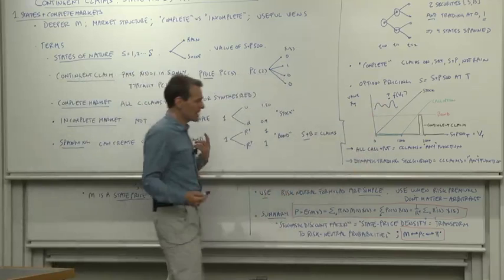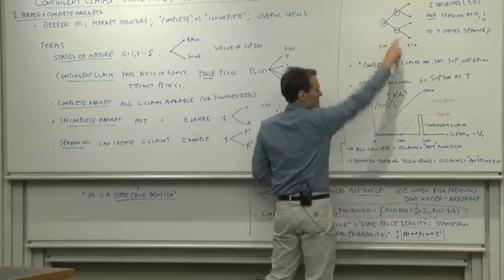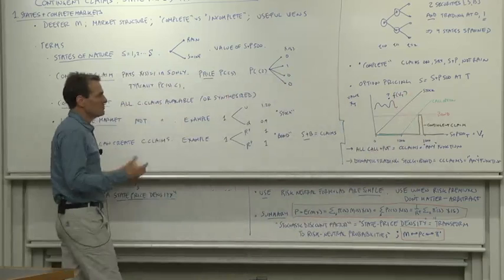Similarly, we have the Black-Scholes formula and that idea behind option pricing, where in that situation, dynamic trading of just a stock and a bond allows you not just four states of nature, but you can achieve all contingent claims at any function.